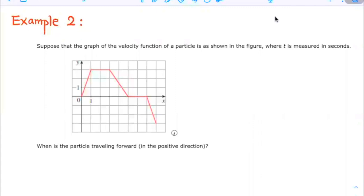Suppose the graph of the velocity function of a particle is as shown in this figure, where t is measured in seconds. When is the particle traveling forward, which means in the positive direction? The particle is traveling forward when the velocity is positive.